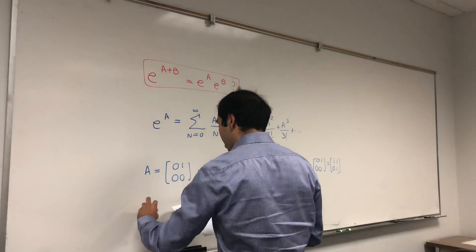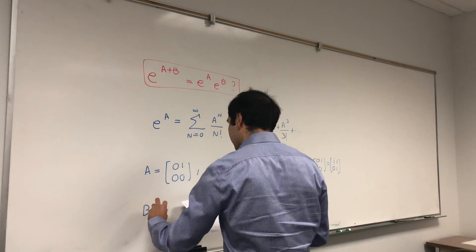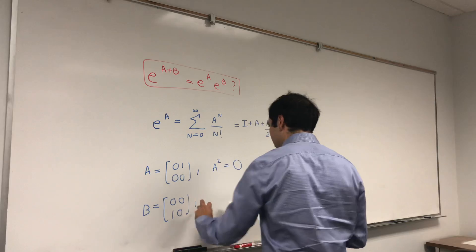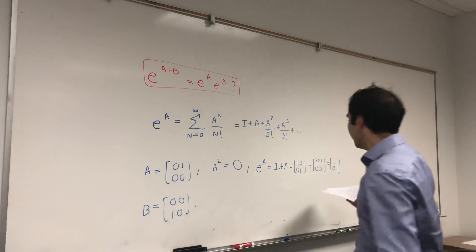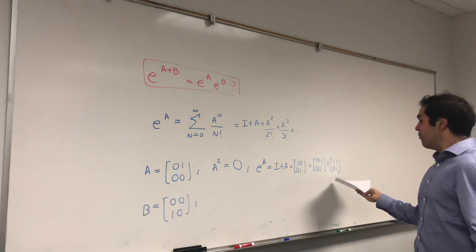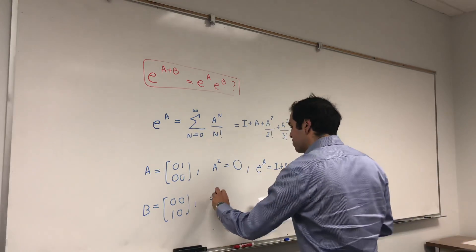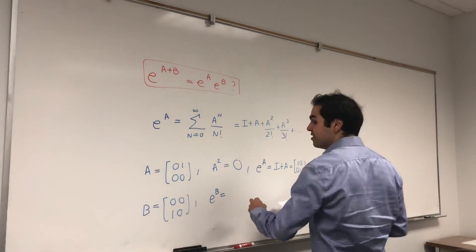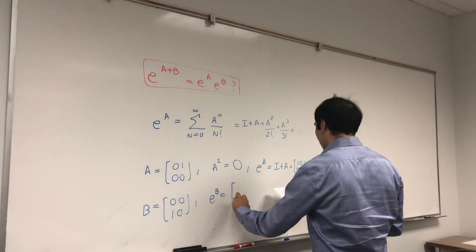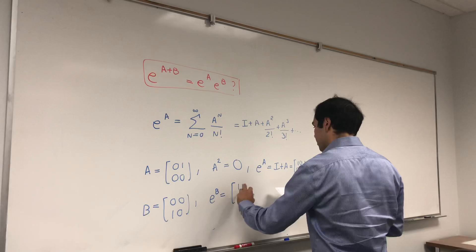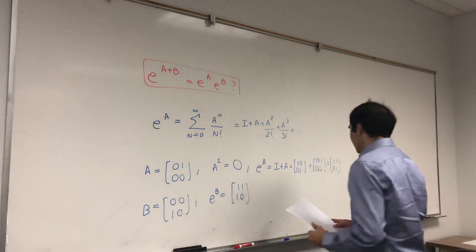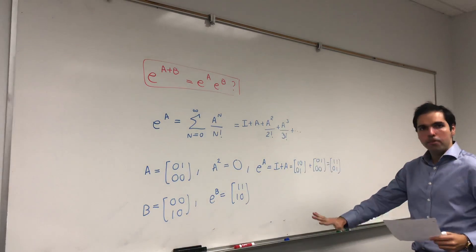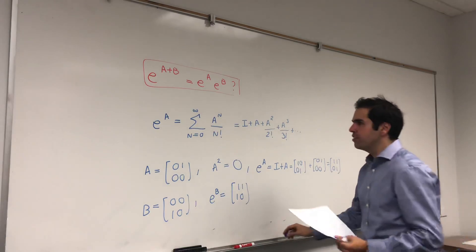Now also consider the following matrix: B is [[0,0],[1,0]]. In an identical way, we can calculate that e to the B is I plus B, which is just [[1,0],[1,1]]. So we get explicit examples of e to the A and e to the B.